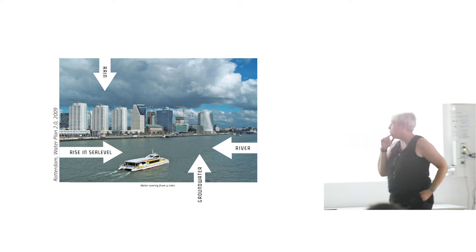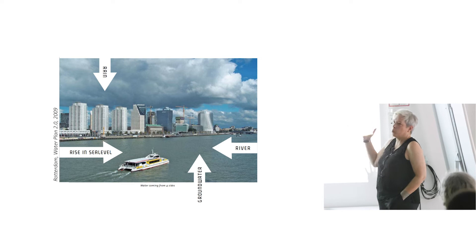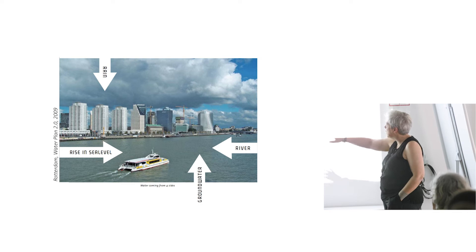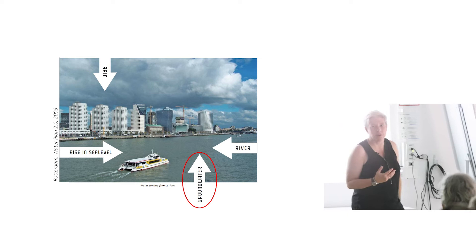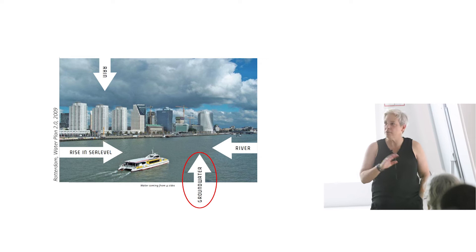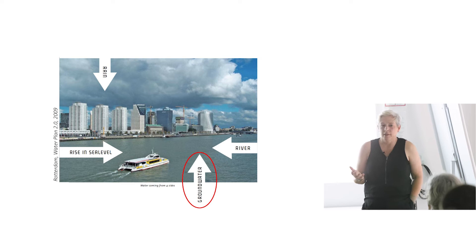This is a diagram from the Rotterdam water plan from 2009. It shows that they were thinking about how flooding comes from rain, from sea level rising, from rain coming down the river from far away, and from rising groundwater. That's really what I think is the piece that people don't understand in countries where groundwater is not managed.